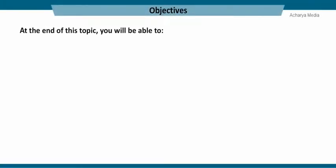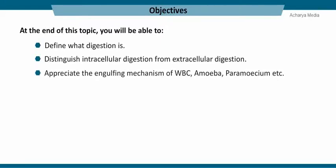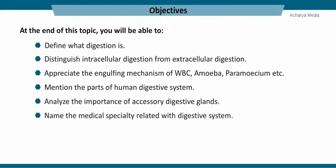At the end of this topic, you will be able to: define what digestion is; distinguish intracellular digestion from extracellular digestion; appreciate the engulfing mechanism of white blood corpuscles, amoeba, paramecium, etc.; mention the parts of the human digestive system; analyze the importance of accessory digestive glands; and name the medical specialty related with the digestive system.